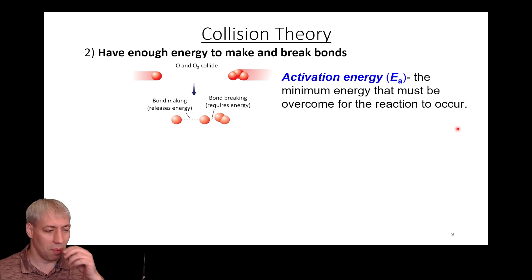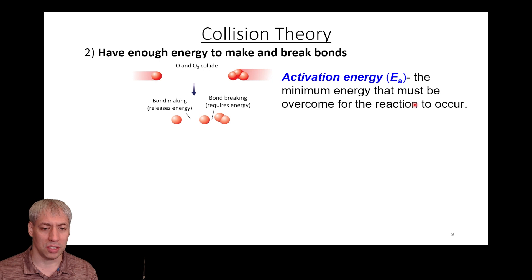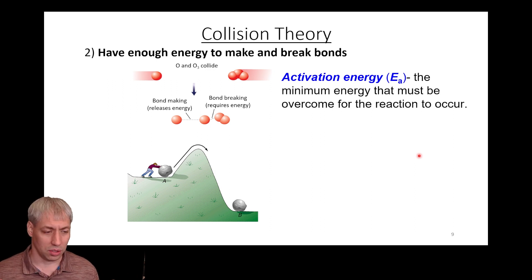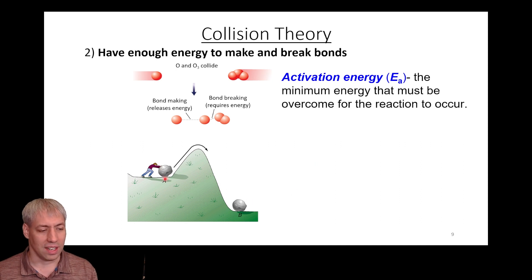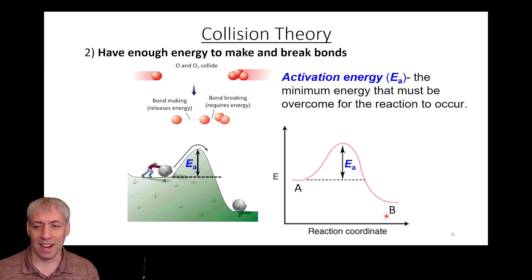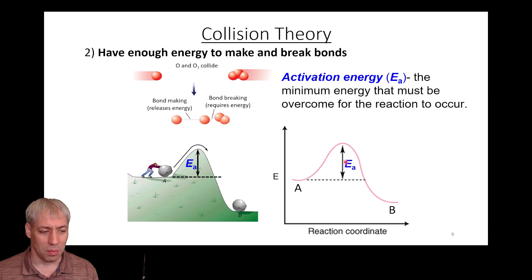The energy required to make a reaction happen is related to activation energy — the minimum energy that must be overcome for a reaction to occur. Casually we use this term (like the activation energy to get off the couch), but in science it has a formal definition. The analogy: to roll a rock down a hill, you first have to push it up over the edge. In chemical kinetics, we use a reaction coordinate diagram showing that to go from reactants to products, you can't just go directly — you have to have enough energy to get over that hill, which is the activation energy.